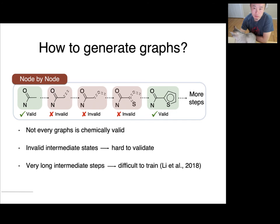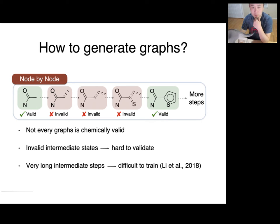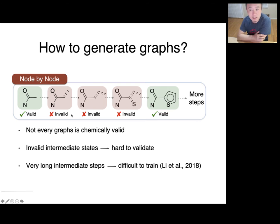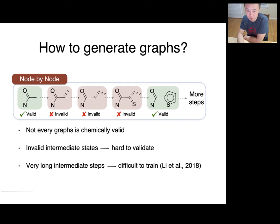So how to generate a graph? The main approach so far is generating graphs node by node, doing very local expansions. This has turned out to be not very successful, because not all graphs are chemically valid. If you expand an existing molecule graph by one atom, it may end up in intermediate states that are not valid chemically. So that creates a lot of challenges. Previous work, as we'll show in the experiments, has a lot of challenges just creating valid molecules, let alone better property.